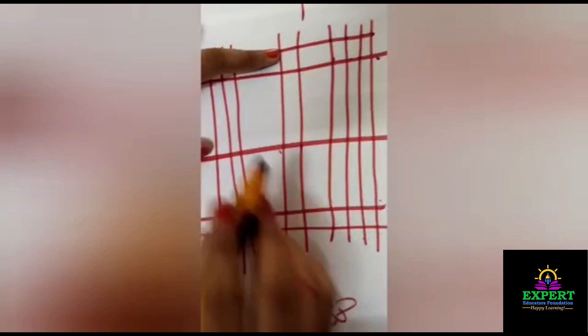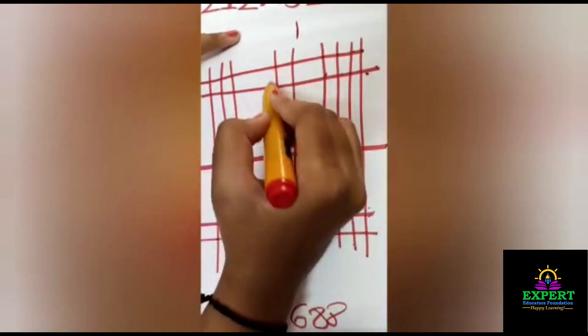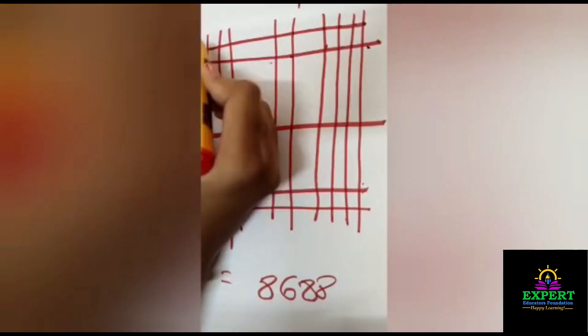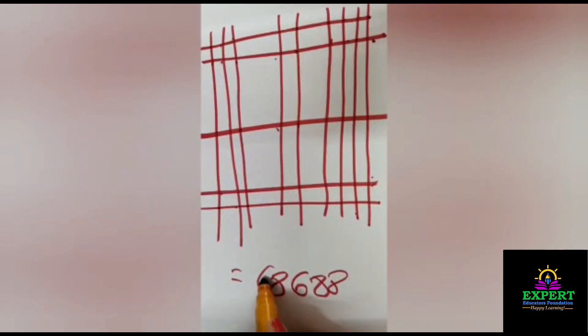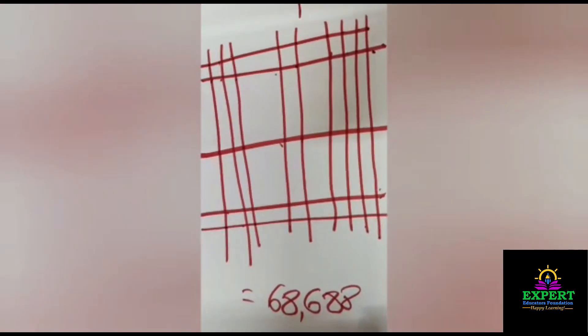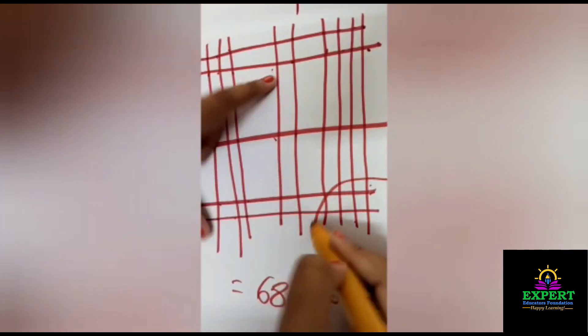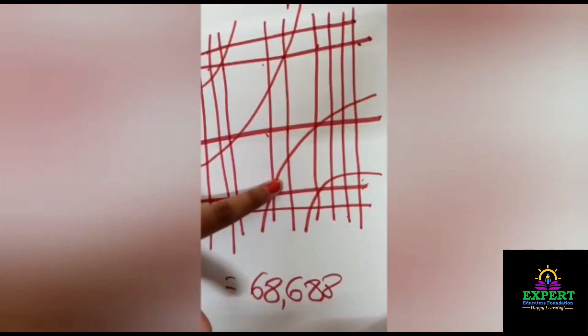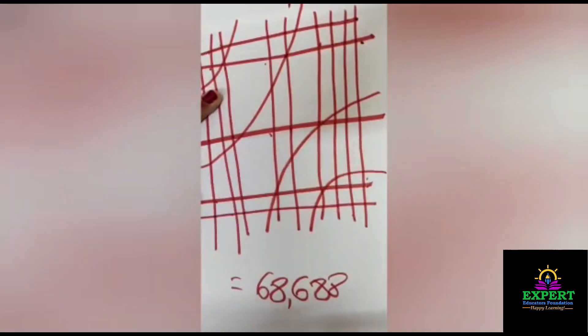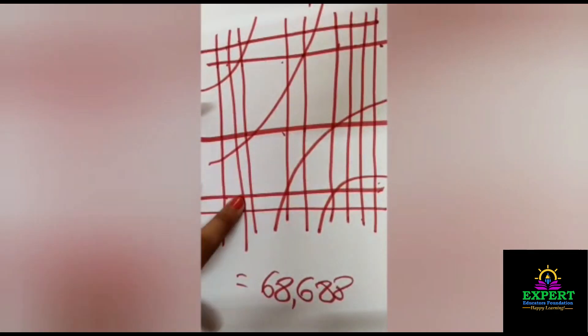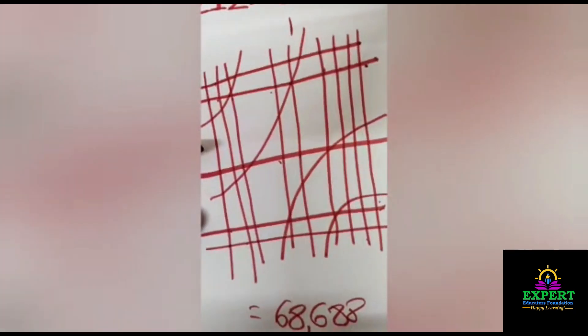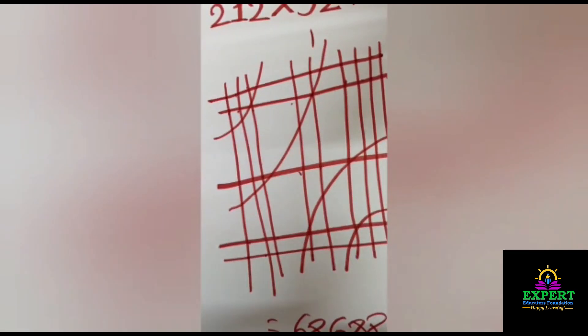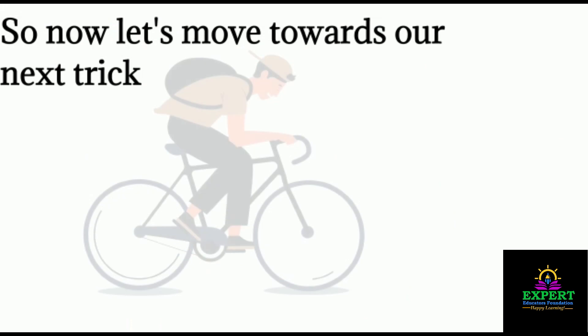Now over here we will do one carry over to this one, so here I will write 1 and here I will write 6. The next one we count: one, two, three, four, five, six, seven, and the carry 1 will be 8. So the answer is 68,688. First we have to count this one, then this - five steps we have to follow. If the number is more, we give the carry over to another number. You can check the answer on calculator also. Now let's move towards our next trick.